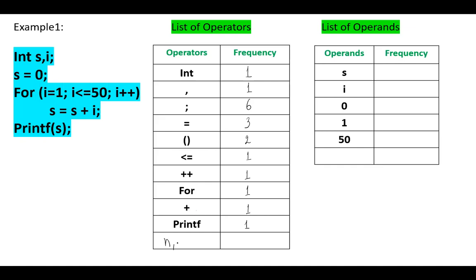So here, n1 equals, we have 10 operators, capital N1. The sum of these values is 8, 13, 15, plus 3, 18.